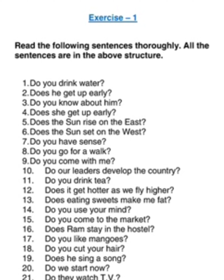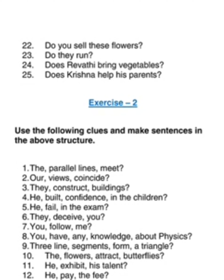Now we come to Exercise 2. The clues are given and you have to make the sentences. Use the following clues and make sentences in the above structure — positive questions. So you bring 'do' or 'does' before the subject. The parallel lines meet — it's a question. So how do you ask the question? Do the parallel lines meet?